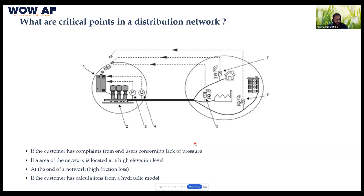If you have a network on a gradient and a particular house is at a higher elevation than the normal average gradient, then that becomes a critical point — one that is at higher elevation. High frictional losses are another criterion.